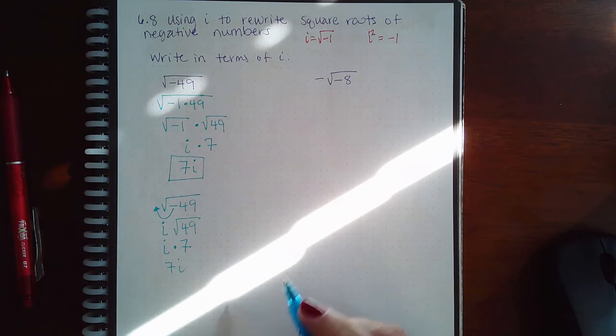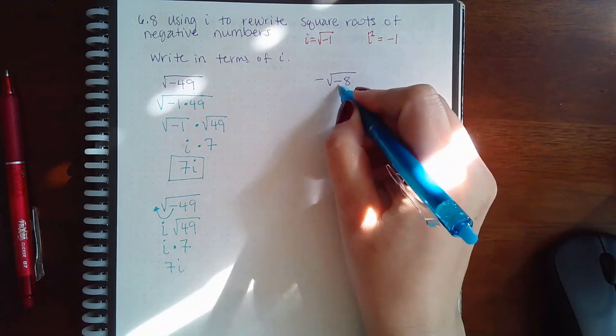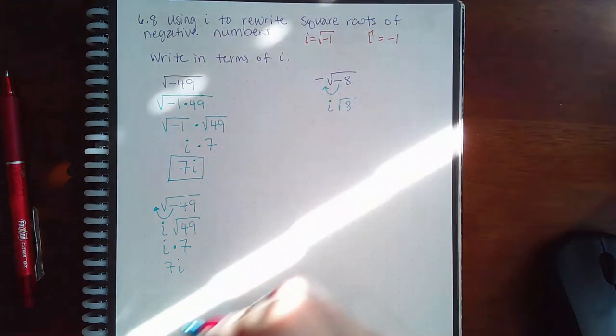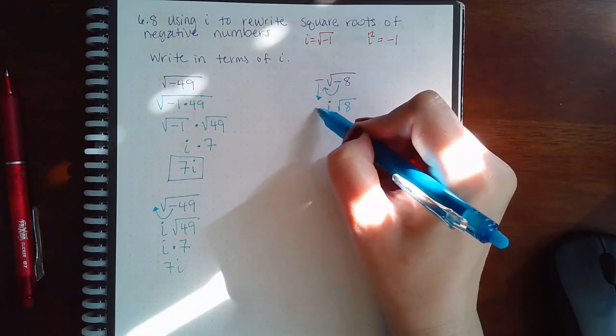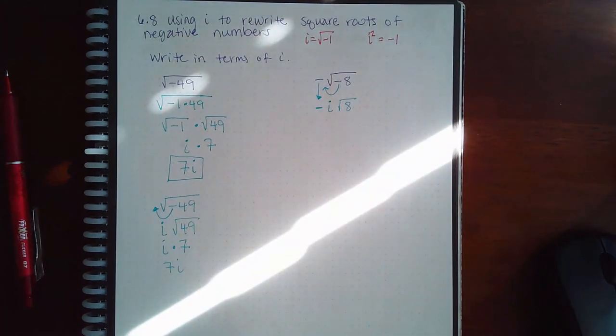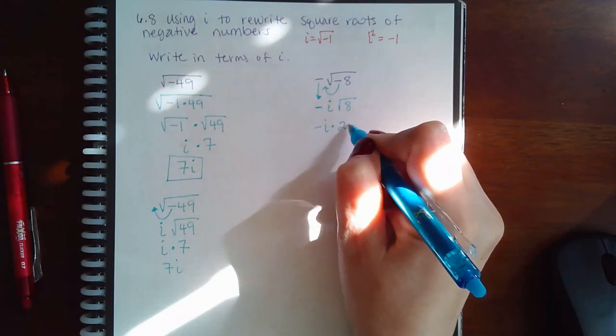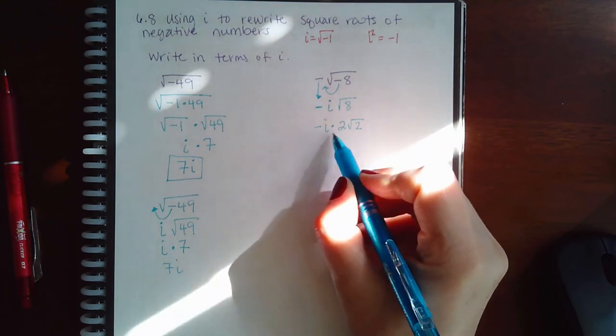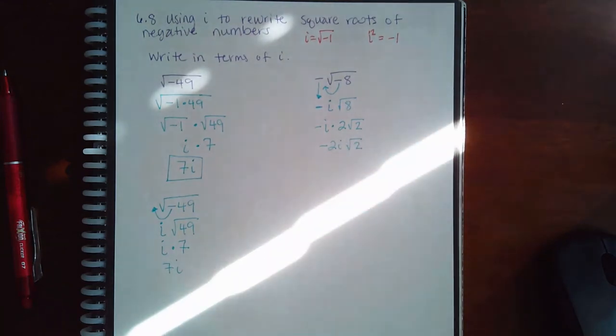Same thing here. You have to be careful with this one with the negative and the negative. You could take negative out and when you take it out it becomes an i, and then now this is just the square root of eight. But there was already a negative there to begin with, so that negative does have to come down. And then when you do the square root of eight, you actually get two square root of two if you simplify. And then again, we don't like to write numbers like this—we like to write two i and then your radical stays on the side.